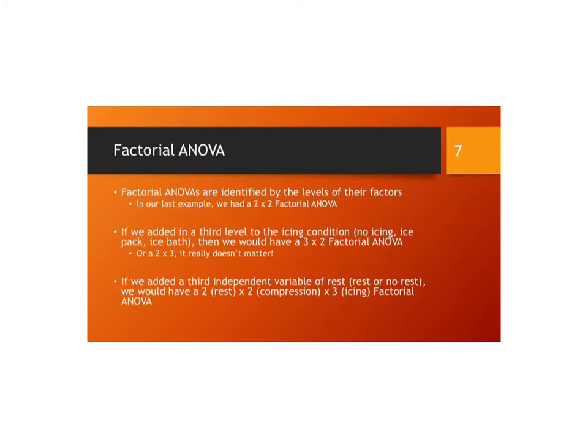Factorial ANOVAs are typically identified by the levels of their factors. In our last example, we had a two by two factorial ANOVA because each of our independent variables had two levels. If we had added a third level to the icing conditions, such as no icing, ice pack, and ice bath, then we would have a three by two factorial ANOVA. If we added a third independent variable of rest or no rest, we would then have a two by two by three factorial ANOVA.